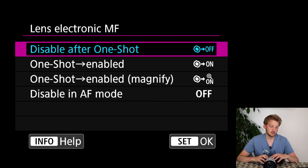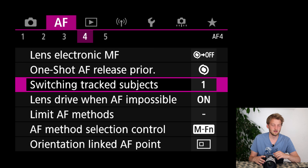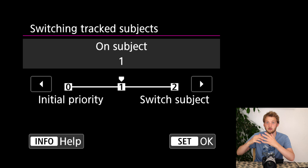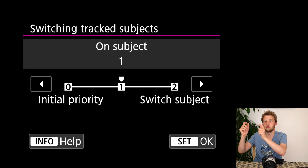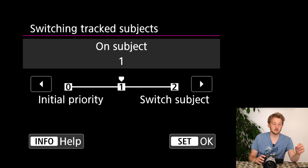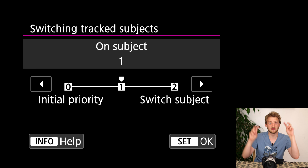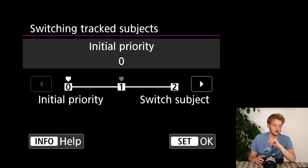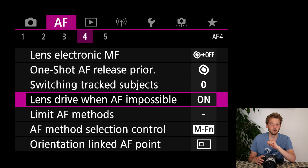The setting for one-shot doesn't concern me much. The 'switching to tracked subject' setting sounds similar to servo reactivity — the difference is that servo reactivity handles things like a bush appearing in front of the duck or temporarily losing the subject, while this one specifically talks about switching between distinct subjects. This might be more important in sports or with a flock of birds where the camera can detect different individuals.